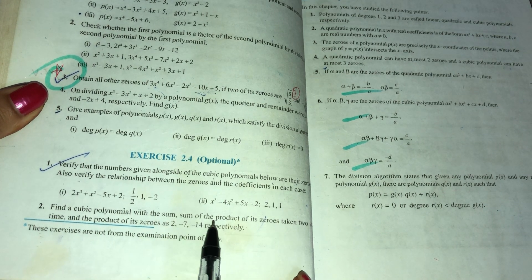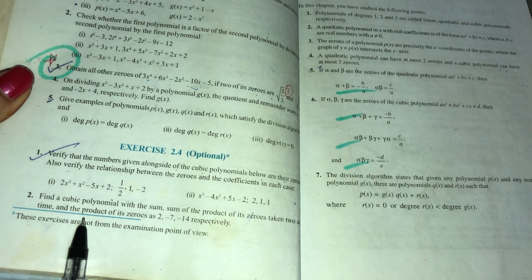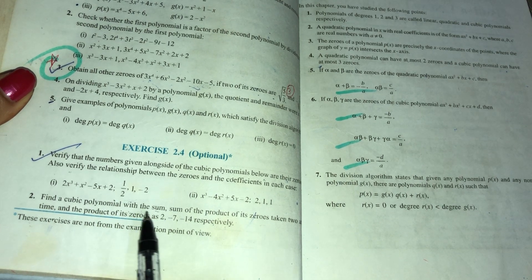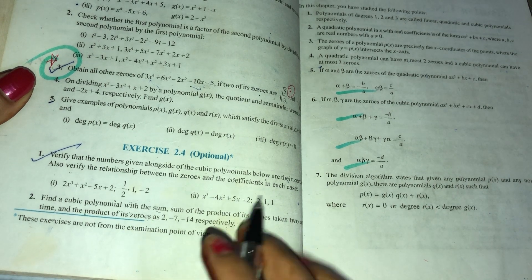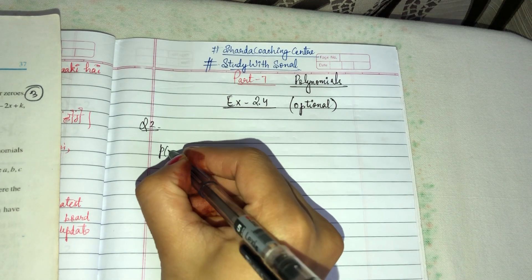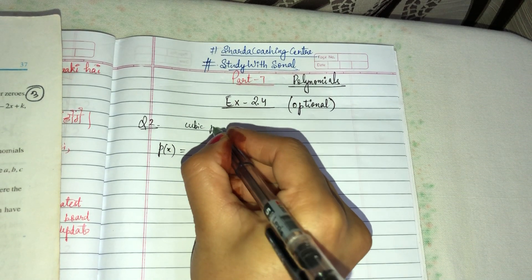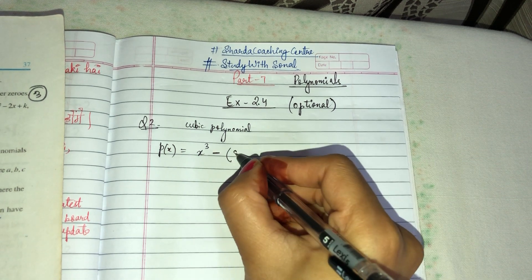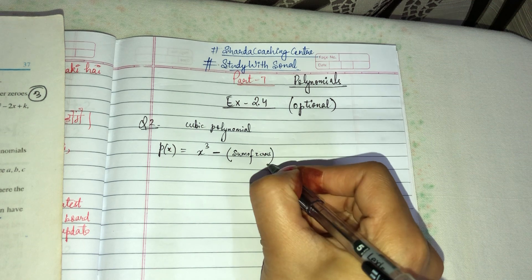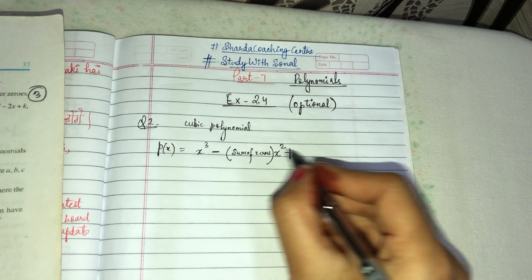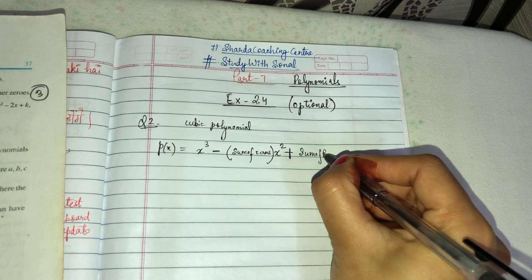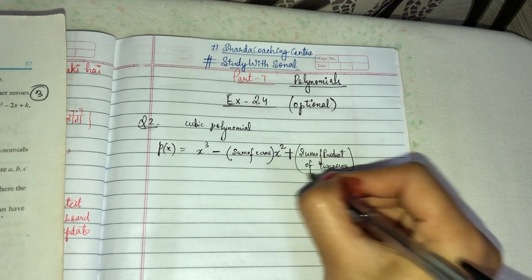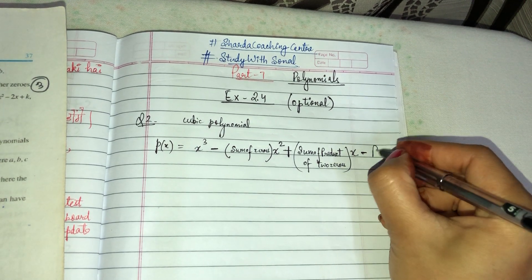Find a cubic polynomial with the sum, sum of the product of zeros taken two at a time, and product of zeros as 2, minus 7, and minus 14 respectively. So we have to find the cubic polynomial. First let me tell you the formula. A cubic polynomial is: x³ minus (sum of zeros) x² plus (sum of product of two zeros) x minus (product of zeros).